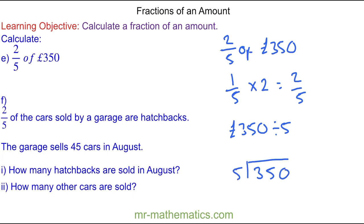With five on the outside, five into three don't go. We'll carry three over, five into 35 go seven times and five into zero go zero. So now we know one fifth of 350 pounds is 70 pounds.